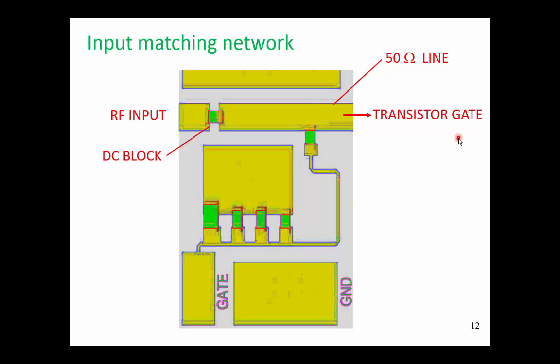Here is our input matching network with some detail. Here is our 50 ohm line, so over here we have a gate connection, and the gate looks very much like 50 ohms in parallel with a small capacitance.